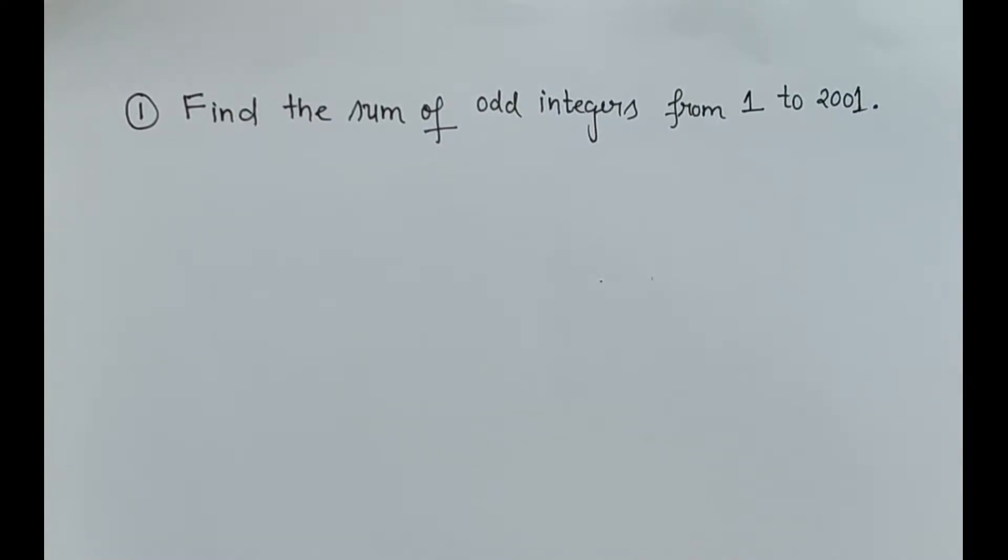In my previous video I have already explained the formulas that we are going to study in this chapter. Now one is for finding the nth term: an is equal to a plus n minus 1 into d.